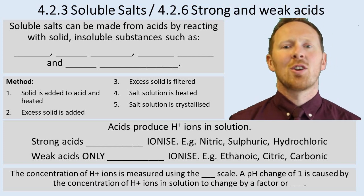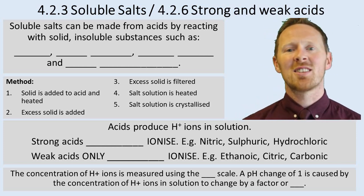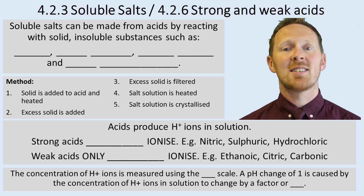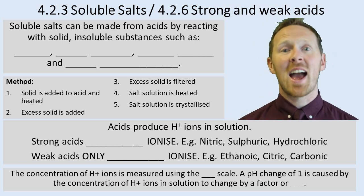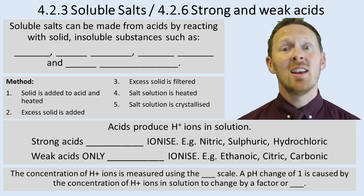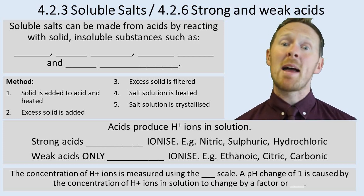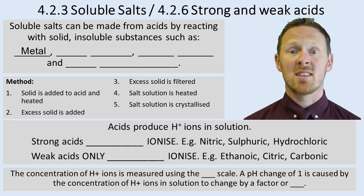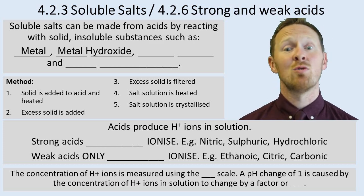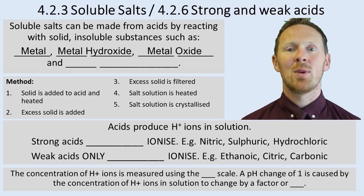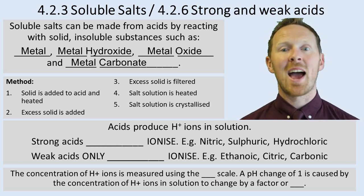4.2.3 soluble salts. We'll also mention 4.2.6 here which is strong and weak acids. Soluble salts can be made by reacting acids with solid, insoluble substances. So for instance you can react a metal with an acid, you can react a metal hydroxide with an acid, you can react a metal oxide with an acid, or you can react a metal carbonate with an acid.